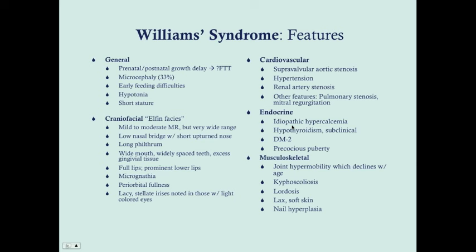Endocrine issues include idiopathic hypercalcemia — the mechanism is still under investigation — which can be particularly problematic during infancy, though most patients outgrow it. Many patients have subclinical hypothyroidism, though some may have symptoms. A significant number will go on to develop type 2 diabetes, likely related to a gene on chromosome 7 involved in glucose metabolism. A minority will develop precocious puberty, which warrants referral to a pediatric endocrinologist.